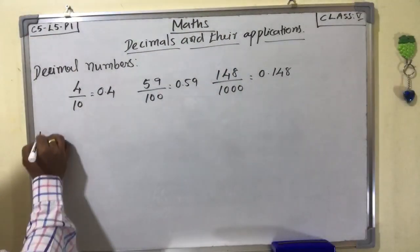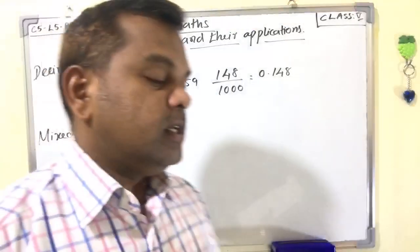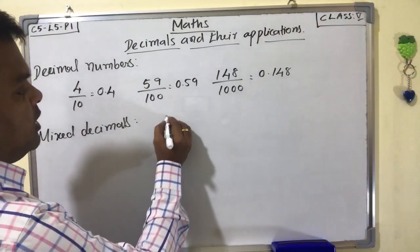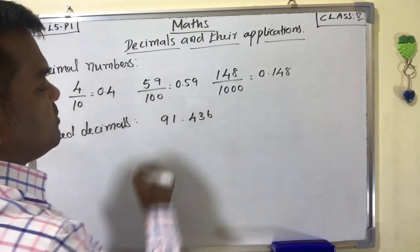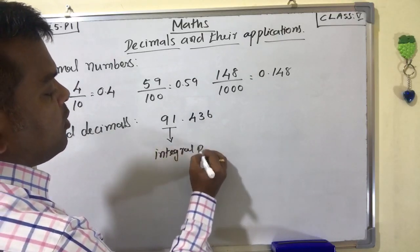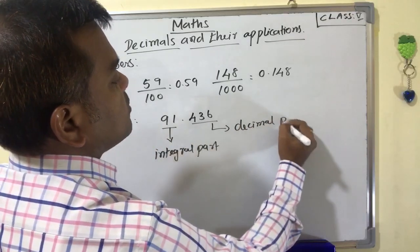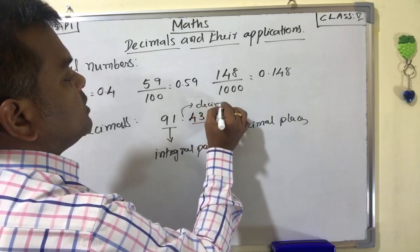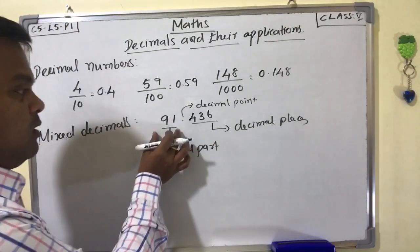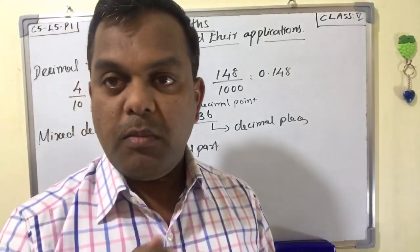Next, mixed decimals. A mixed decimal contains a whole number and a decimal part. For example, 91.436 — here 91 is the whole number, which we call the integral part. After the decimal point, we have the decimal places. The point itself is called the decimal point.